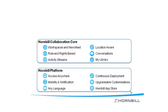Location awareness is another key idea within the Hornbill Collaboration Core — the ability to see which colleagues are nearby. This is driven by the mobile app knowing exactly where you are and being able to share that information with your colleagues, should you wish.